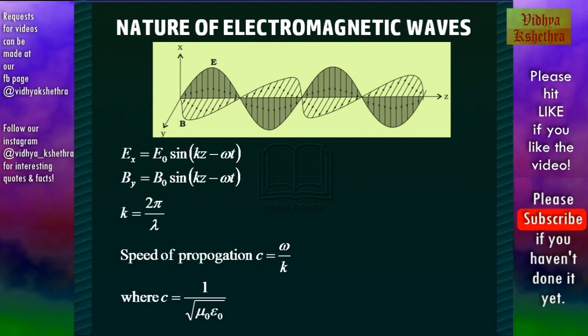The magnetic field along the y-axis is given by By = B₀ sin(kz − ωt). The propagation constant k is related to the wavelength by k = 2π/λ. The speed of propagation of the electromagnetic wave is c = ω/k. Using this equation we can find the speed of the electromagnetic wave if the equation for the wave is given.